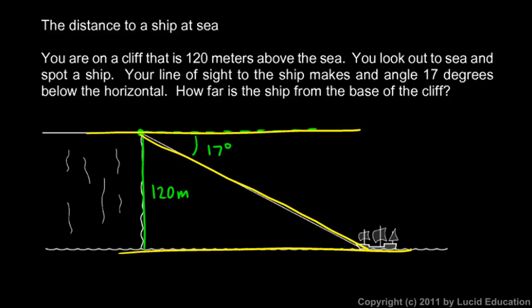Alternate interior angles are always equal. So if this is 17 degrees here, then this is 17 degrees down here. So let's write that in. 17 degrees. And we're going to think about this triangle. And the cliff here is vertical and the water is horizontal. So this is our right angle down here in this corner. And we're told to find how far the ship is from the base of the cliff. So this is the distance we're looking for.